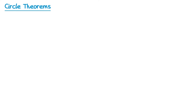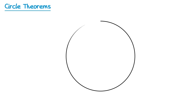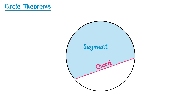Hello and welcome to this video where we're going to learn about circle theorems. Before we do our first theorem we're going to need to know the names of some key points of a circle. If we draw a circle and then draw a straight line that goes from one side of the circle to the other, this line is known as a chord. A chord will always split a circle into two segments — one at the top and one at the bottom.